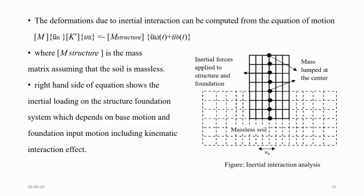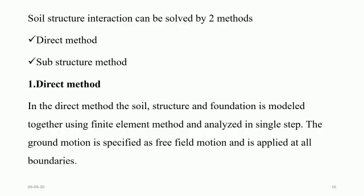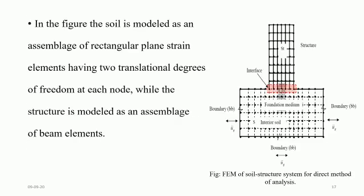Inertial interaction can be computed from the equation of motion. Soil-structure interaction can be solved by two methods: the direct method and the substructure method. In the direct method, the soil, structure, and foundation are modeled together using the finite element method and analyzed in a single step. The ground motion is specified as input motion and applied at all boundaries. In the finite element model, the soil is modeled as an assemblage of rectangular plane strain elements having two translational degrees of freedom at each node, while the structure is modeled as an assemblage of beam elements.